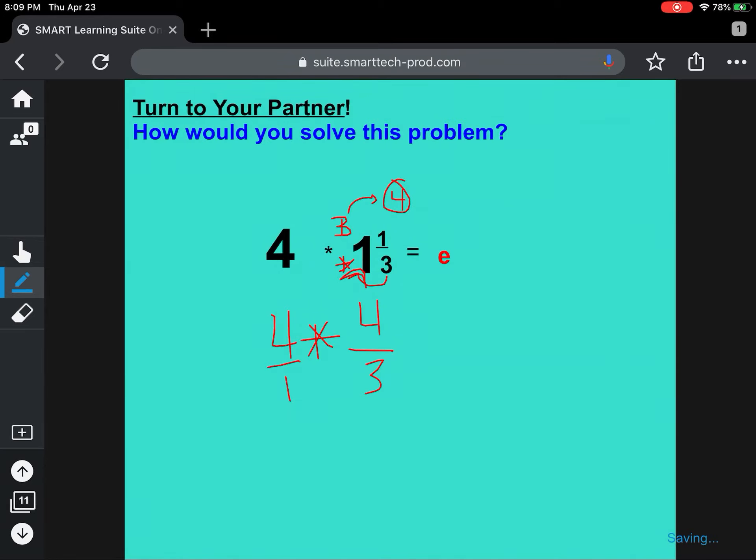Put it over 1. Multiply at the top. Multiply at the bottom. We have an improper fraction. I want you to pause your video now and see if you can convert that improper fraction into a mixed number all by yourself. Remember, ask yourself, how many times does 3 go into 16? Then how many are left over? Once you have your answer converted into a mixed number, turn your video back on to check your work.